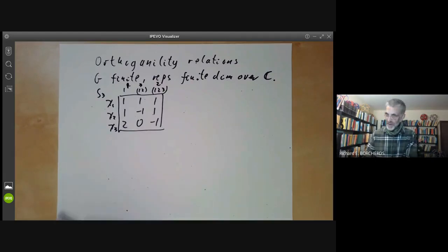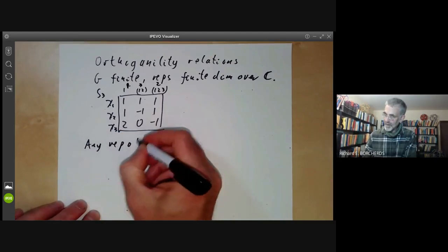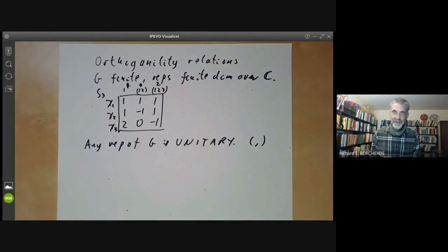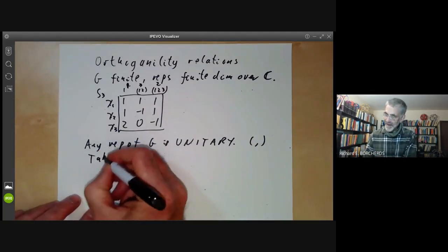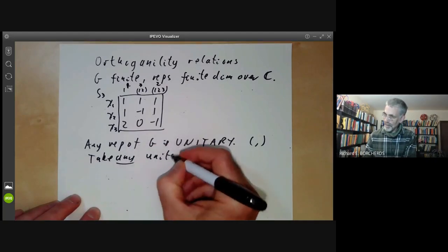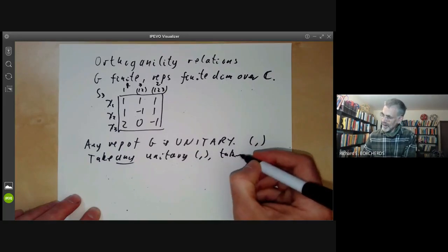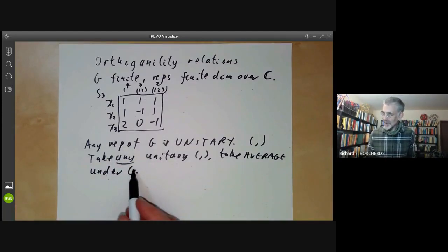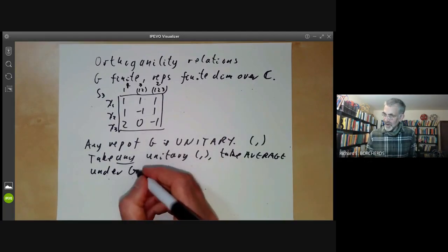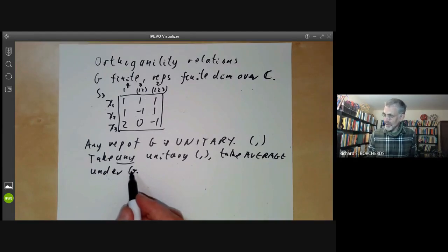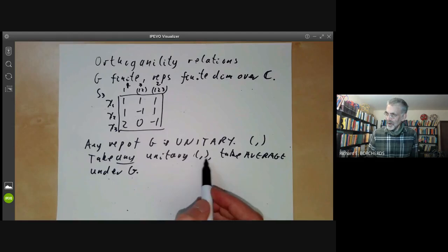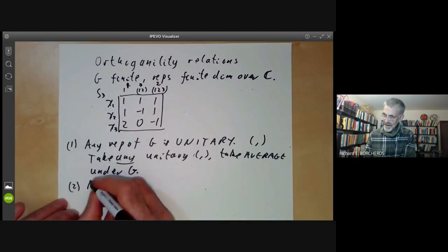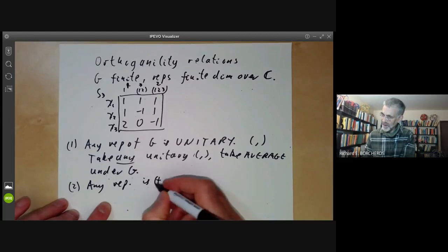The first thing we observe is that any representation of G is unitary. That means it has a positive definite unitary form on it invariant under group G. This follows because we take any inner product and then take the average under G. We can do this because the complex numbers have characteristic zero, so we can divide by the order of G to take averages. Over more general fields, if you take a non-zero inner product and take the average, it might turn out to be zero.